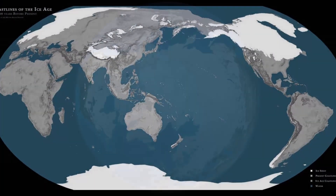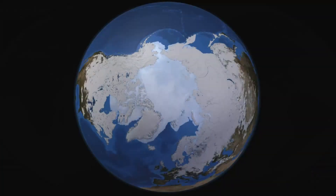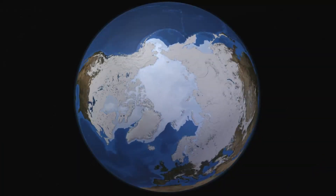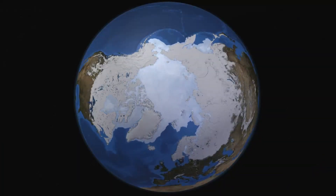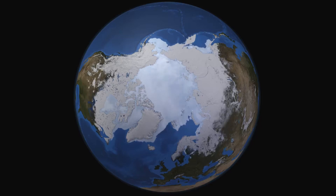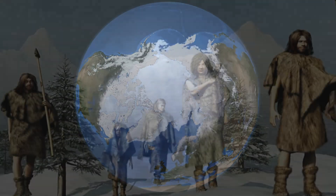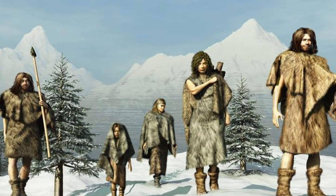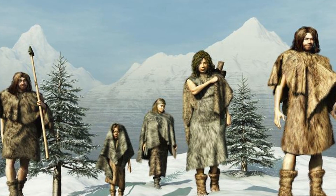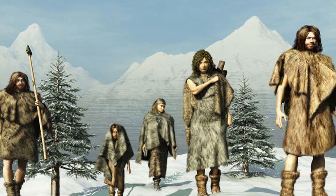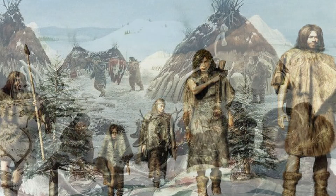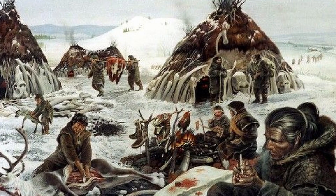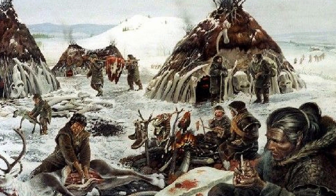Earth was warming as it exited the Pleistocene Epoch about 11,700 years ago. By the start of the warmer Holocene Epoch, humans were in position to take advantage of the favorable conditions by developing agriculture and domestication techniques.